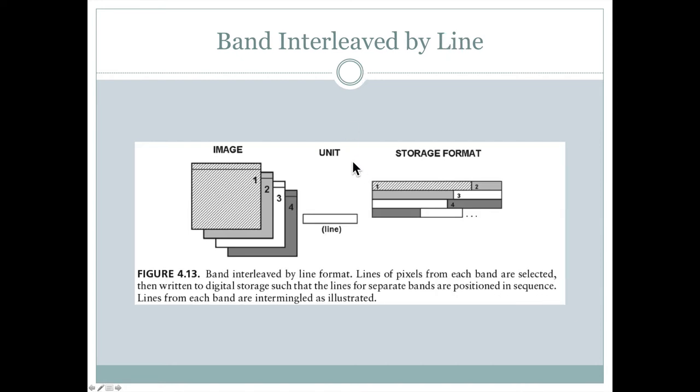There's also band interleaved by line. And this, instead of just taking the first pixel, it takes the first line or row of an individual band of the digital imagery. Then it takes the first row of the second band, then the first row of the third band, and finally the first row of the fourth band of the digital imagery.